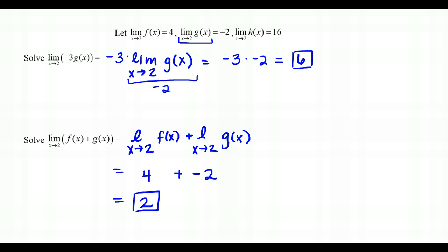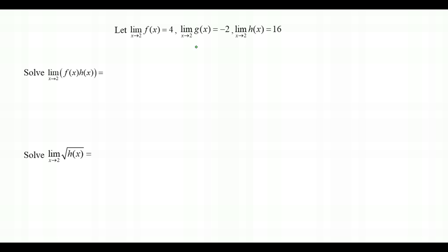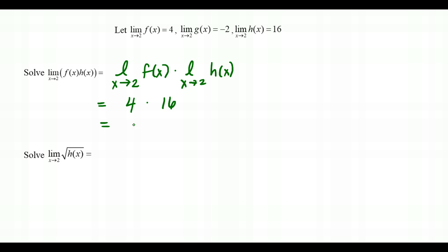For the limit as x approaches 2 of f(x)·h(x), we apply the Product Law to split it into the limit as x approaches 2 of f(x) times the limit as x approaches 2 of h(x). Using the given values, this is 4 times 16, which gives the exact value 64.